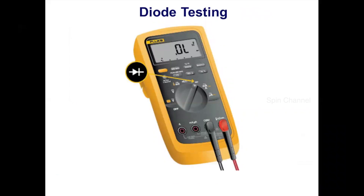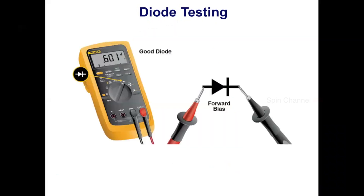Diode testing is done to determine the condition of a diode — whether it is functional or not. Every digital multimeter has a diode checking capability, indicated by the diode symbol. Set the meter in this position, and connect the positive terminal (red probe) to the anode and the negative terminal (black probe) to the cathode. The display will indicate the diode forward voltage. For example, it displays 0.601V here. If the diode forward voltage is displayed, this indicates that the diode is functional.